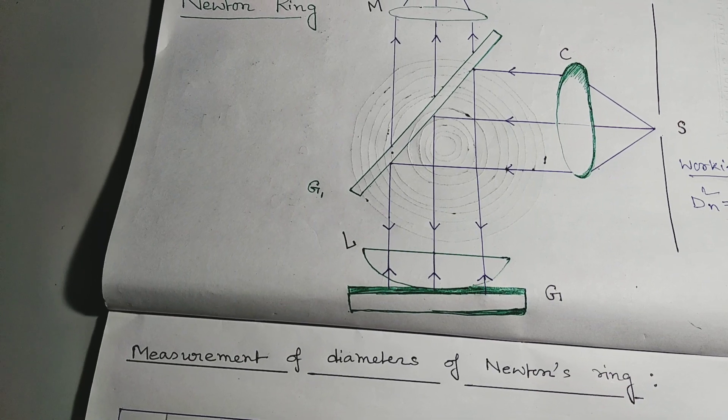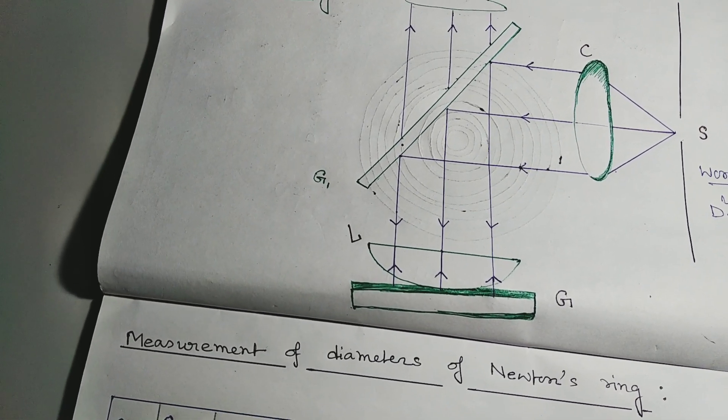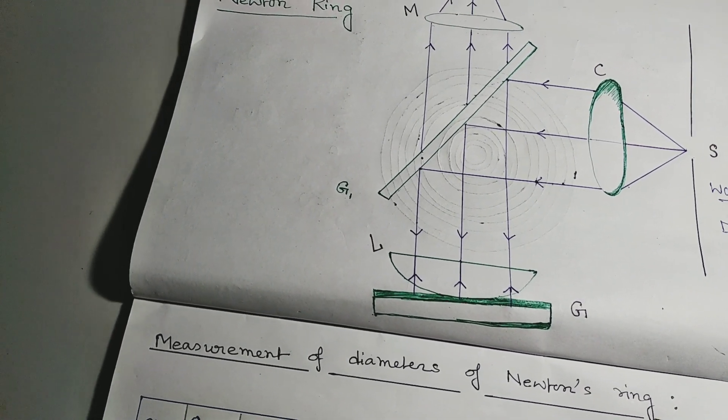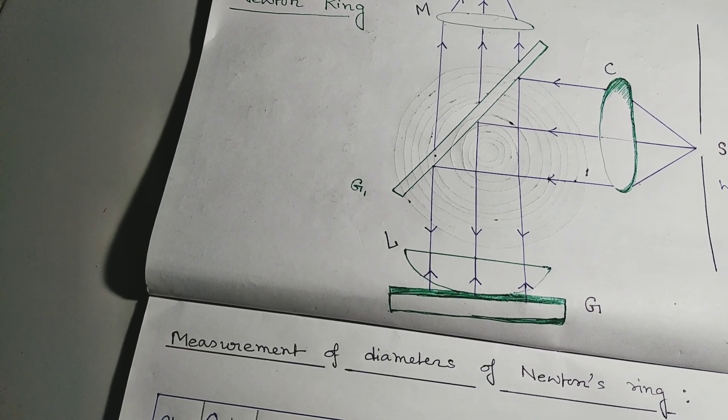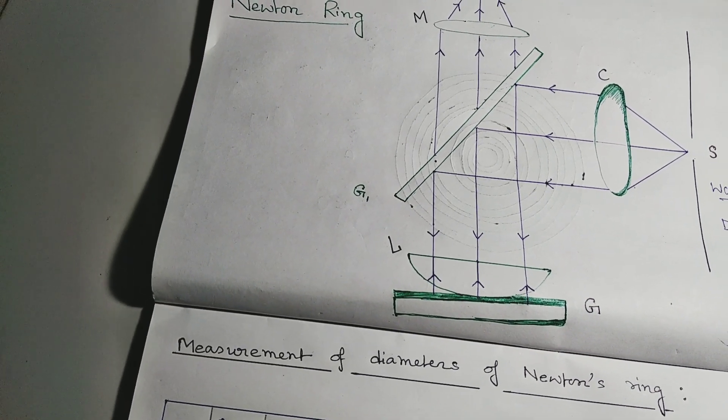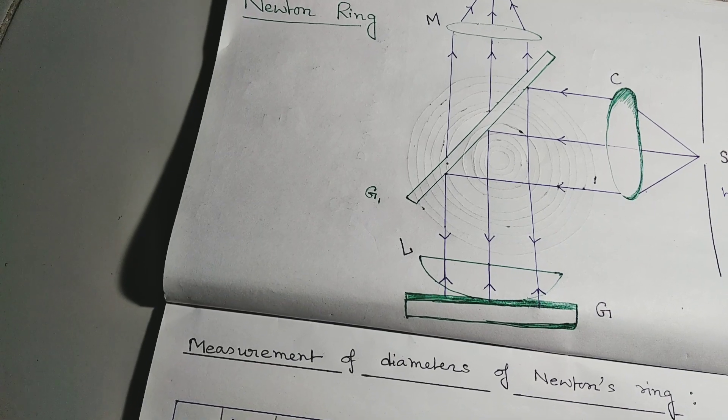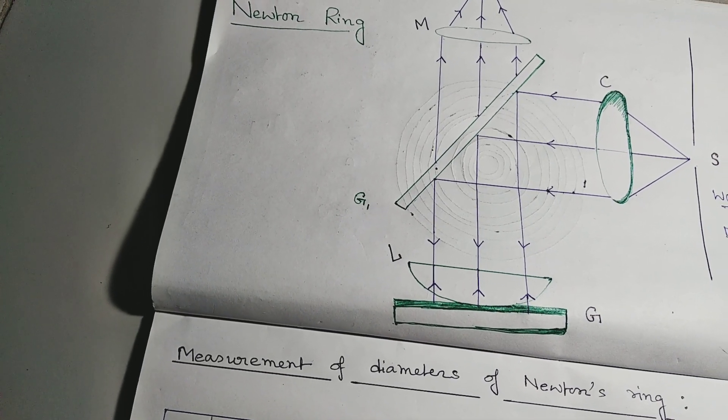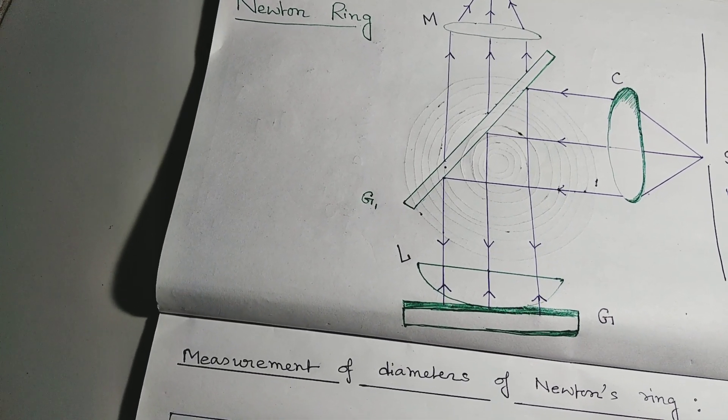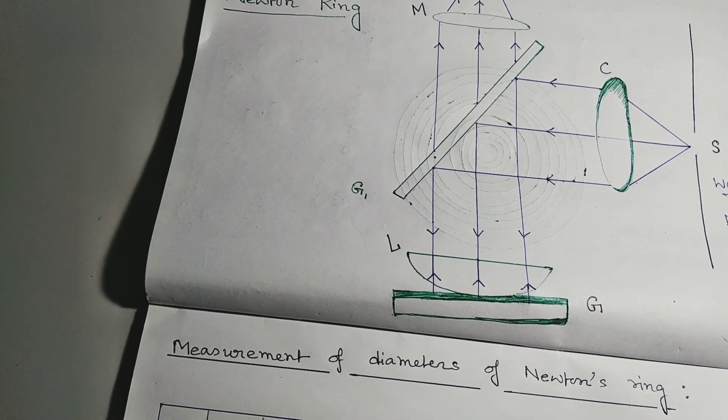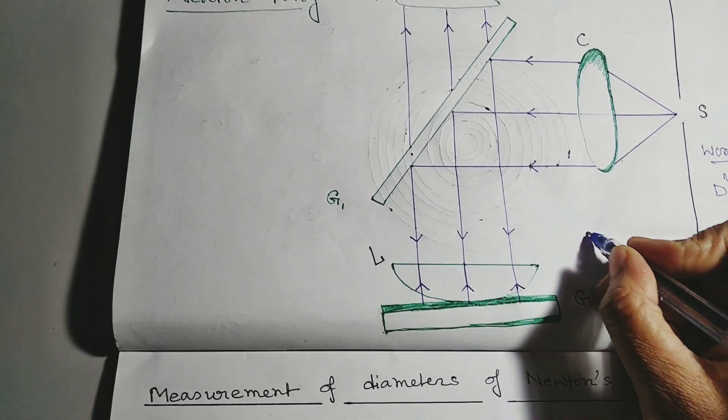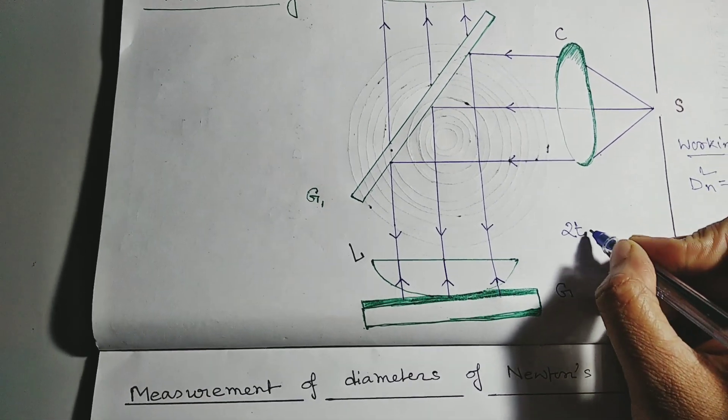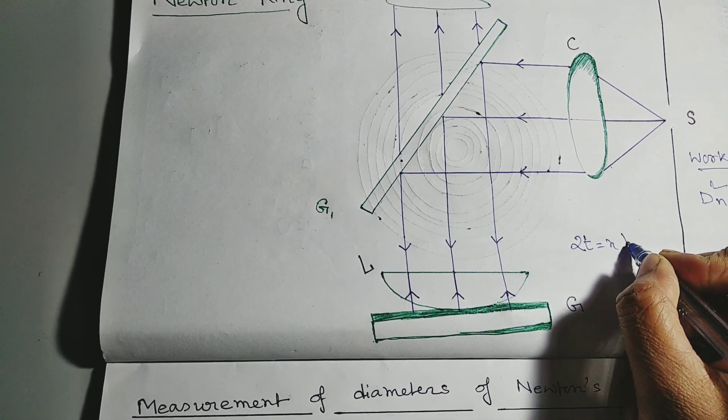If we include that for the normal incident, the optical path difference between the two waves is nearly about 2 mu t. Where mu is the refractive index of the film and t is the thickness of the air flame. So, we get 2 t equals to small n lambda.